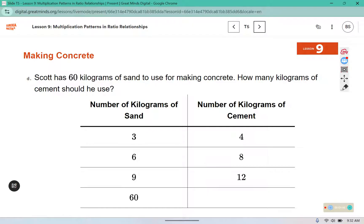Part D, Scott has 60 kilograms of sand to use for making concrete. How many kilograms of cement should he use? So in this part, we need to look for a multiplication relationship. Because trying to add all the way up to 60 is going to take us a while, and we need to insert some rows in our table to get there.